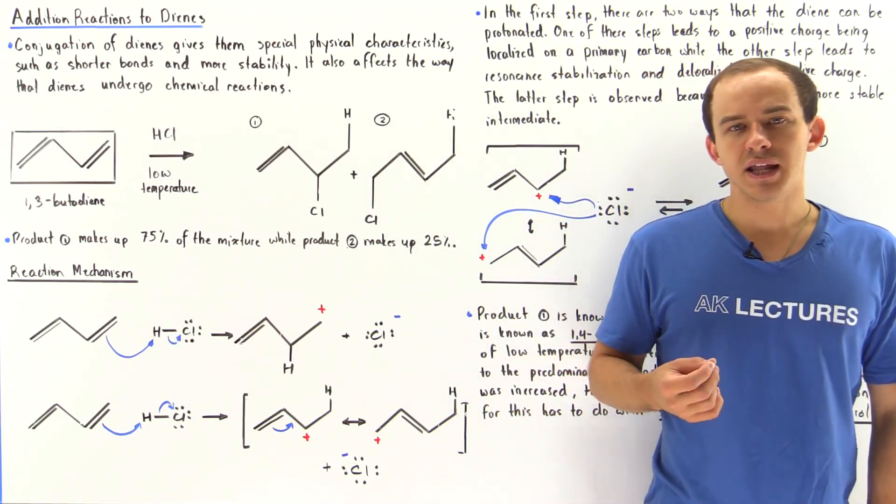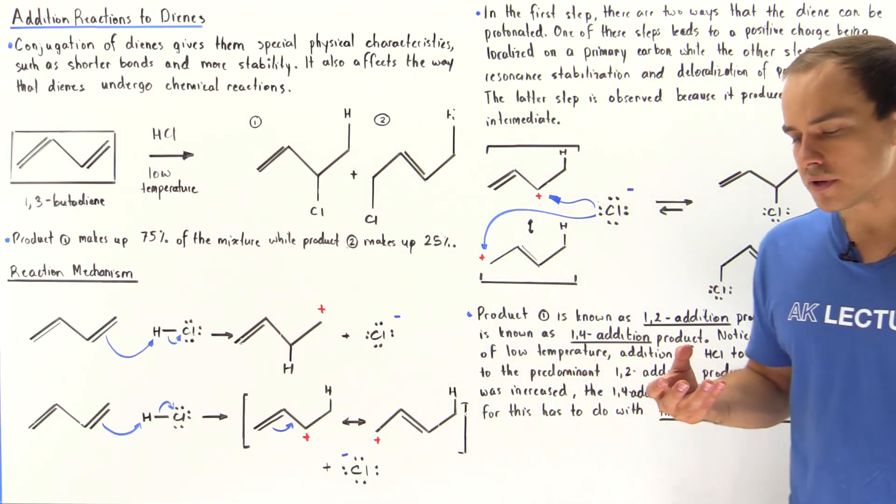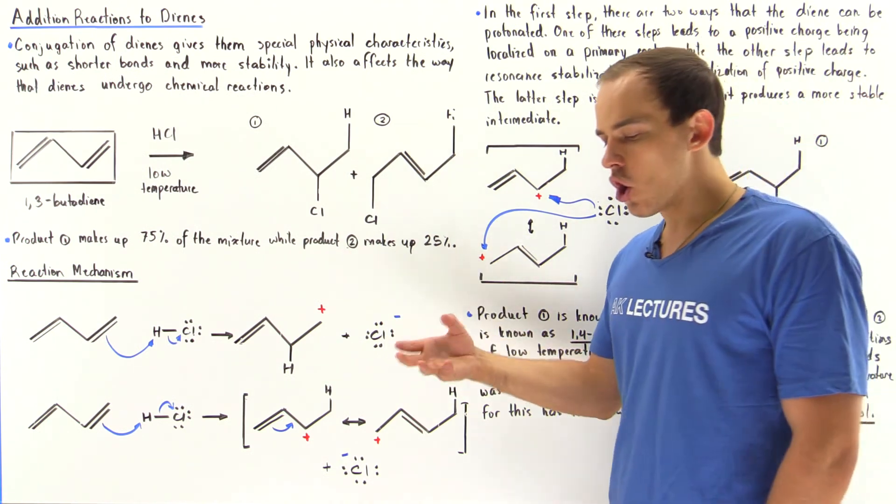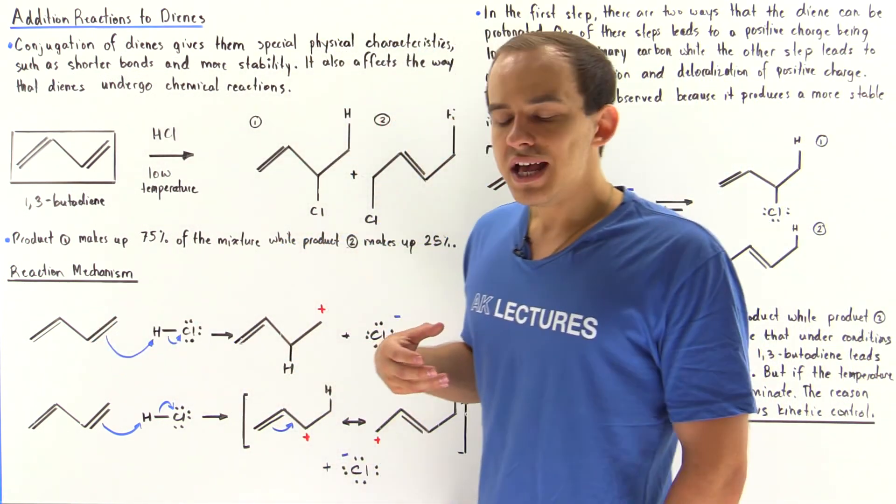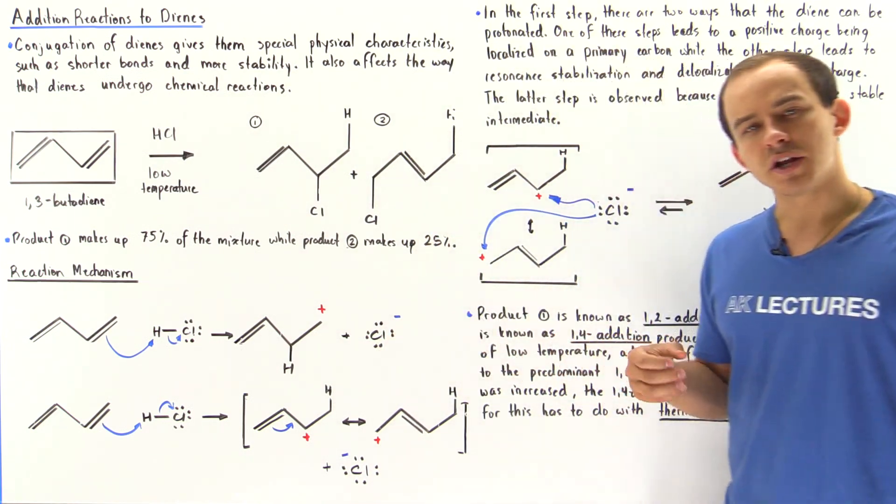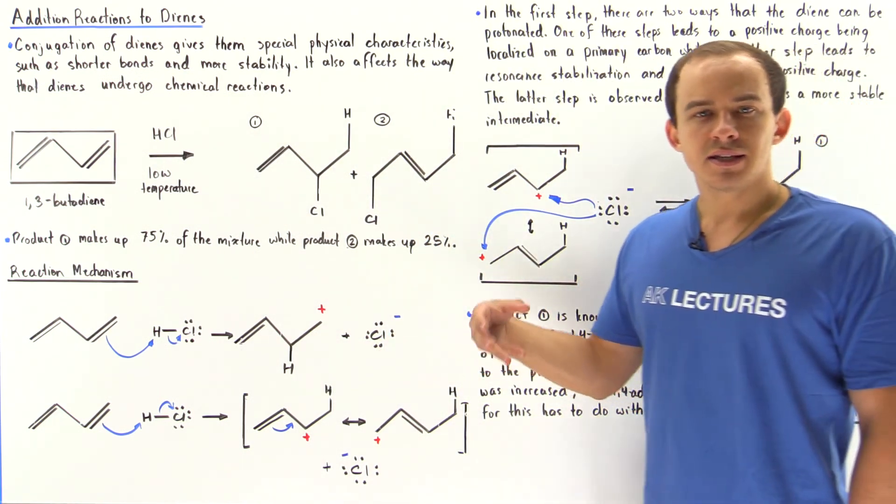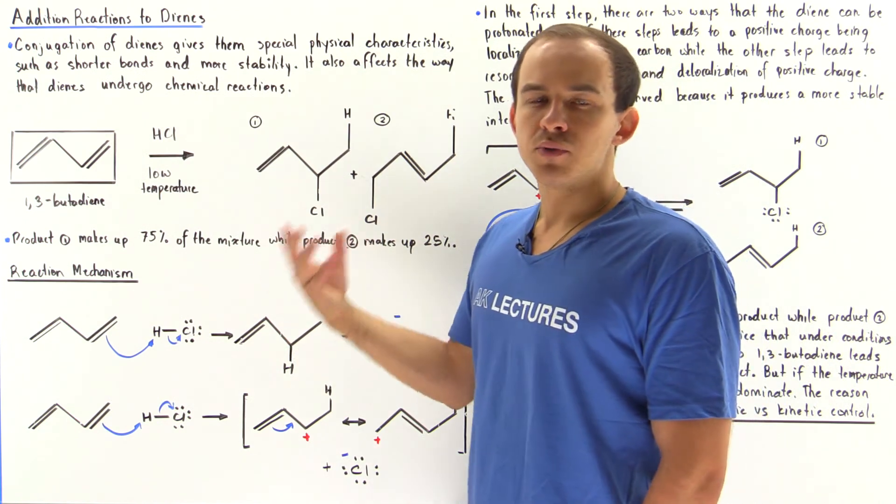Conjugation is the phenomenon by which pi orbitals between the second and third carbon in a diene molecule interact with one another. As we spoke about earlier, conjugation leads to interesting physical properties.